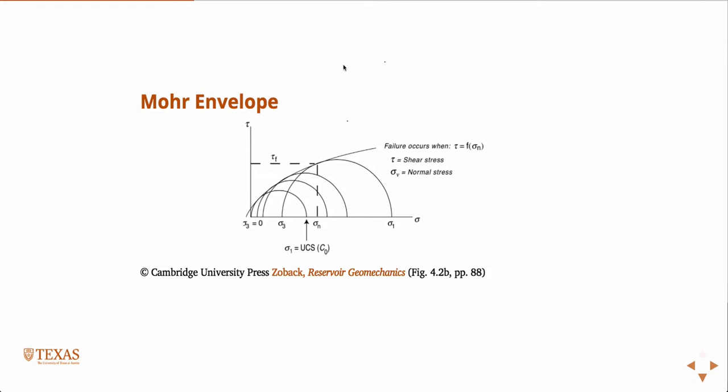And we do these tests by controlling sigma 1 and sigma 3. So, think about a triaxial test, a triaxial compression test, where this would be sigma 1, and the radial confining stress would be both sigma 2 and sigma 3, they're equal to one another. So, this is equal to the confining pressure.